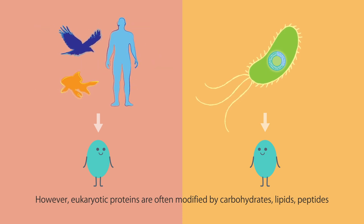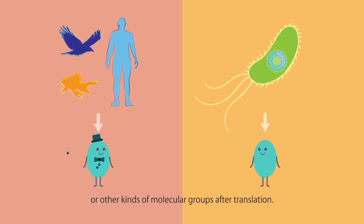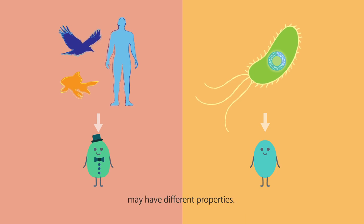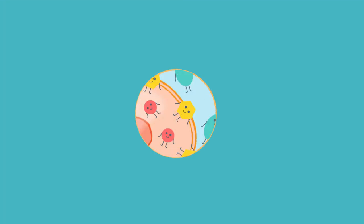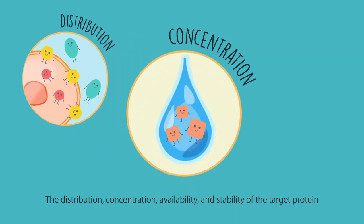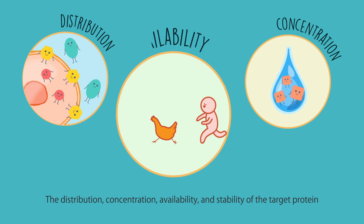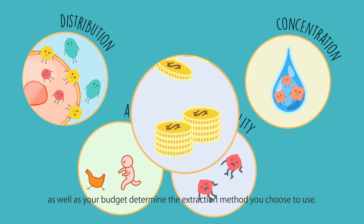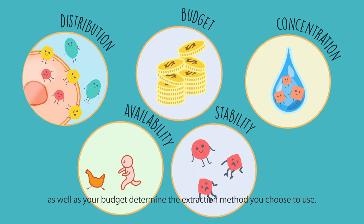However, eukaryotic proteins are often modified by carbohydrates, lipids, peptides, or other kinds of molecular groups after translation. Therefore, a modified protein synthesized by genetic engineering may have different properties. The distribution, concentration, availability, and stability of the target protein as well as your budget determine the extraction method you choose to use.